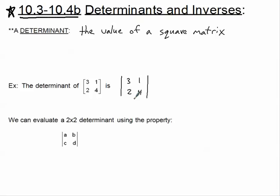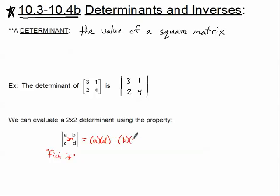We have a property for evaluating a 2x2 determinant. We're going to find the product of the principal diagonal and subtract from it the product of the other diagonal. I call it a little fish, because it kind of looks like a little fish. So I say 'fish it' — this will be equal to the product of a times d, subtracting the product of b times c. This diagonal minus this diagonal — not very difficult math.